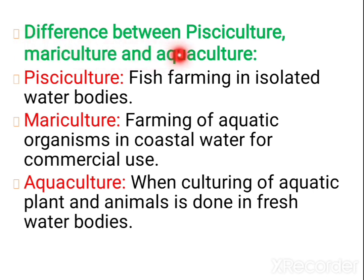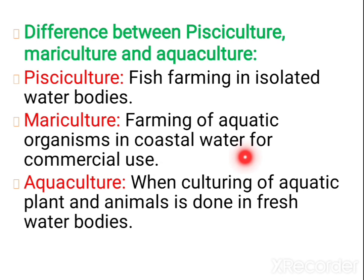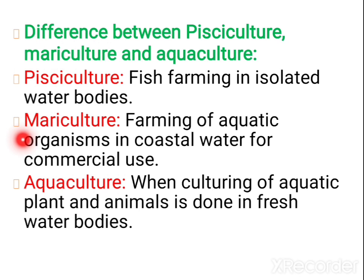Let us study the differences between pisciculture, mariculture, and aquaculture. Pisciculture is fish farming in isolated water bodies. Mariculture means farming of aquatic organisms in coastal waters for commercial use. Aquaculture is the culturing of aquatic plants and animals together in fresh water bodies. Study thoroughly. We will meet in the next class. Thank you.